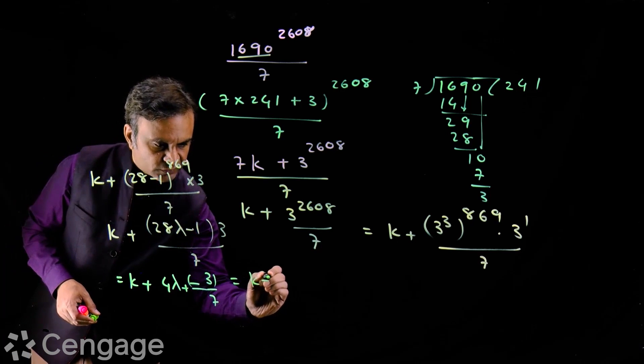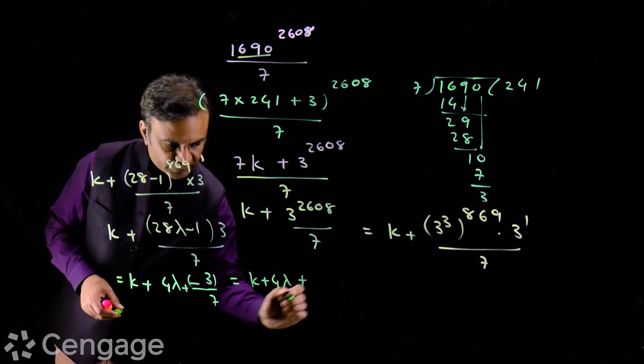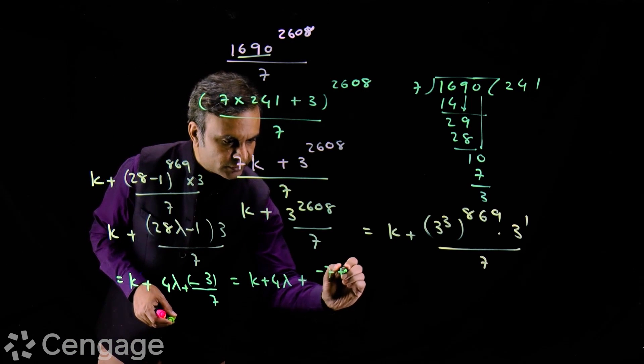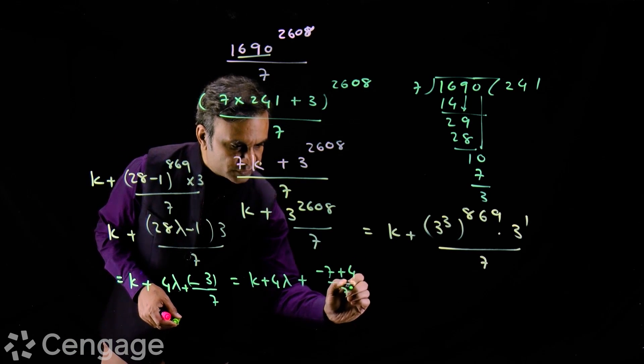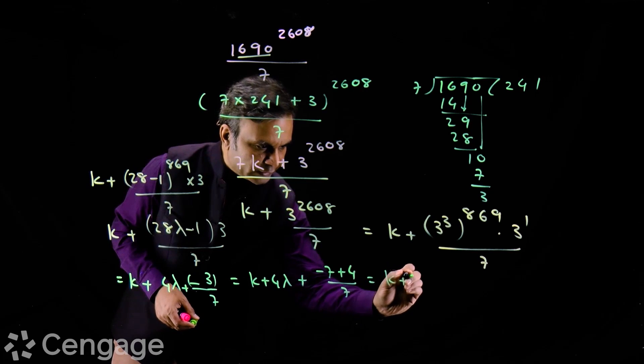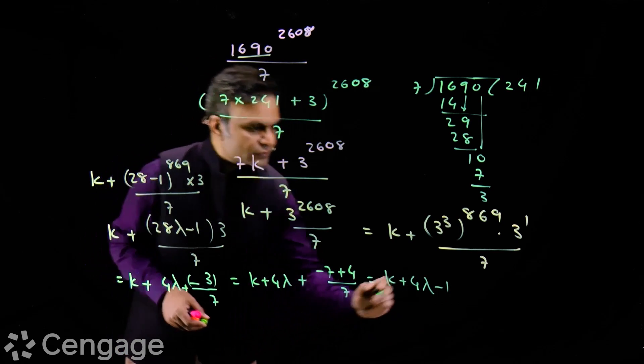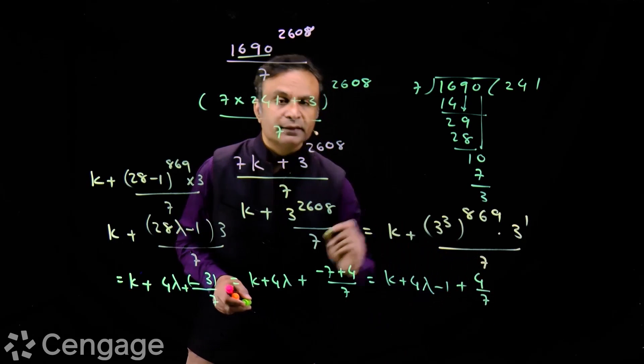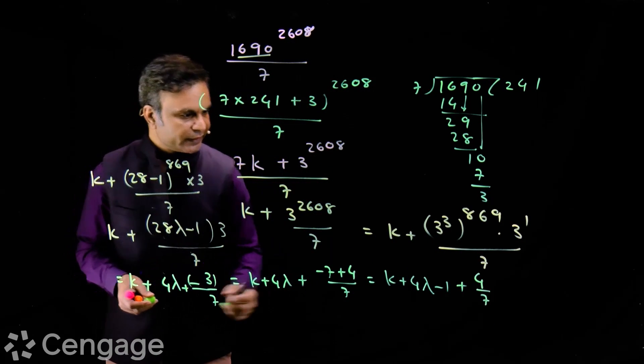We write like this: k plus 4 lambda plus we add and subtract 4. So we have here minus 7 plus 4 over 7. This is k plus 4 lambda minus 1 plus 4 over 7. So remainder is 4.